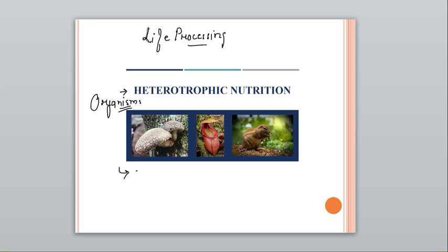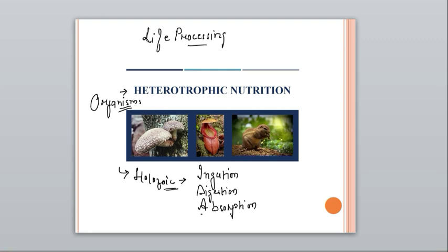The most complex and advanced type is the holozoic mode of nutrition, which is of our concern because we, the human beings — Homo sapiens — have holozoic mode of nutrition. It is completed in five steps: ingestion, digestion, absorption, assimilation, and egestion. Holozoic mode of nutrition is present in amoeba and in human beings, both of which are in our syllabus.